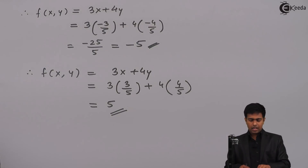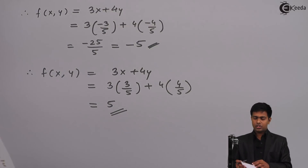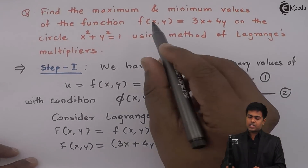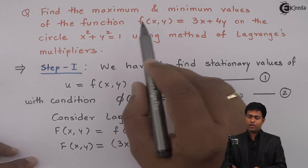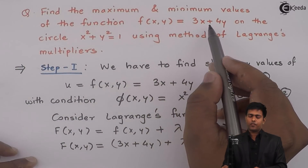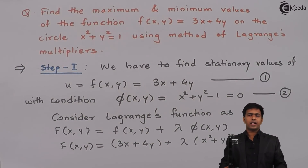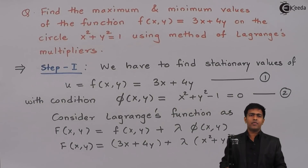So as asked in the question, the maximum value of the function f(x,y) is 5 and the minimum value is -5. Thank you.